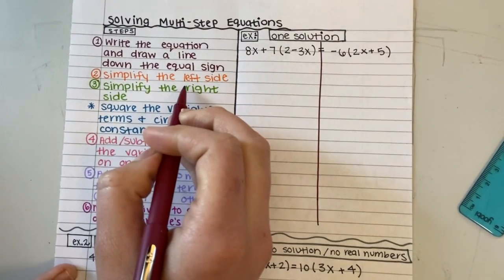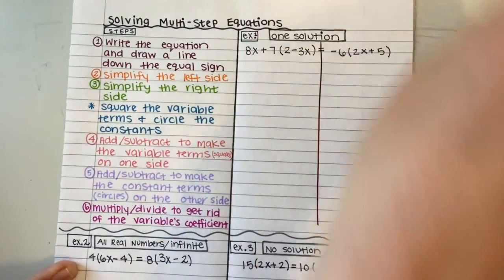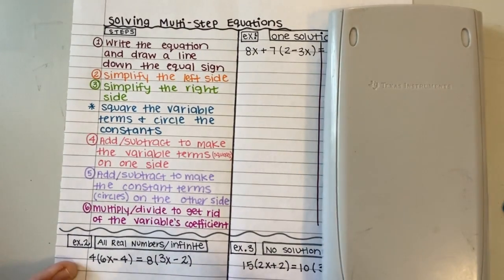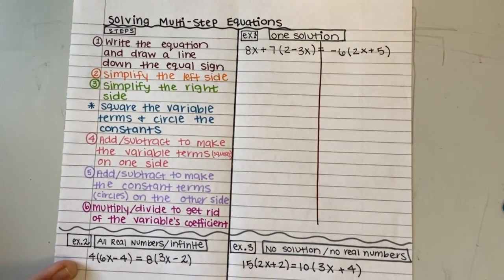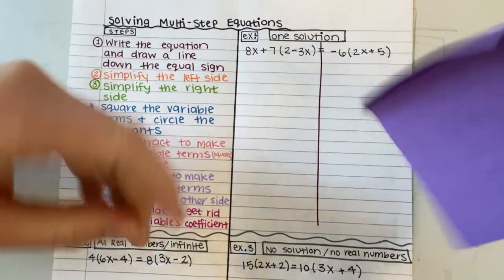My next step is to simplify the left side. So I am not looking at the right side of the equation at all right now. I'm going to cover it up, but I'm going to cover it up with something that does not get in my way.